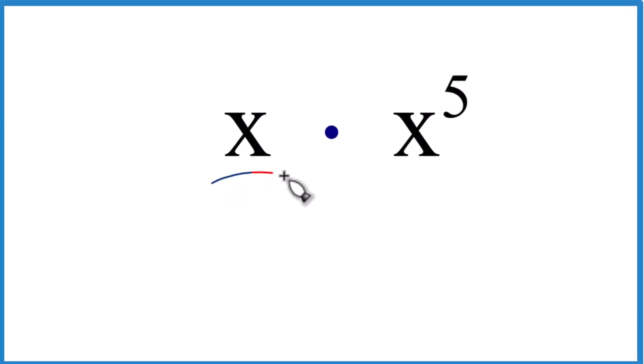If you're asked to multiply x times x to the fifth, here's how you do it. We could just take, we have x here, and we could multiply x times five x's.